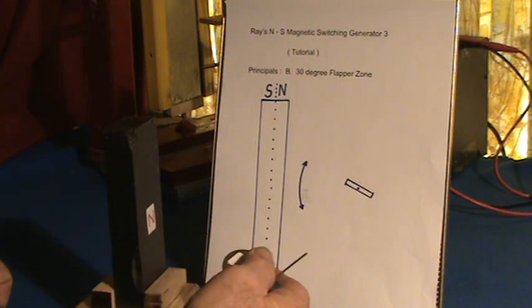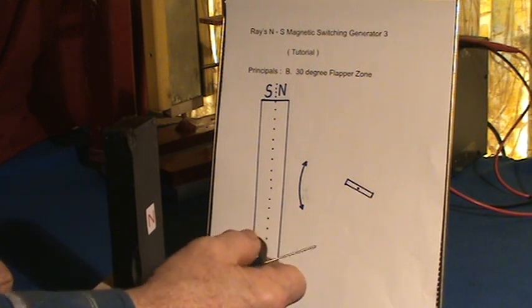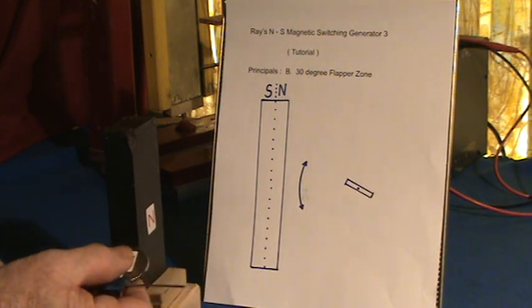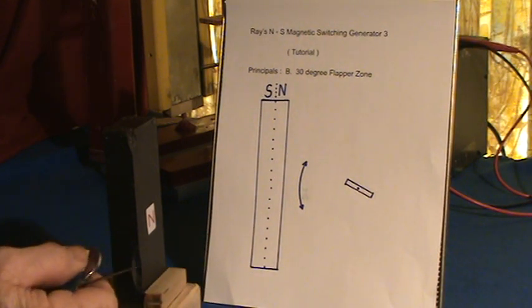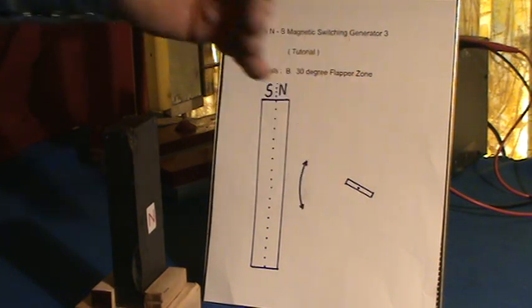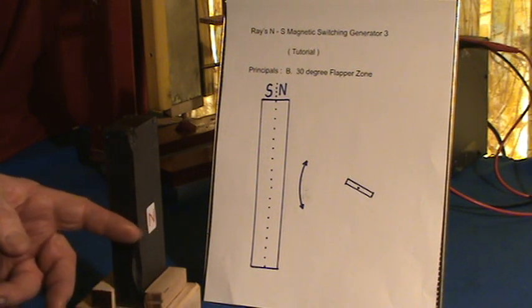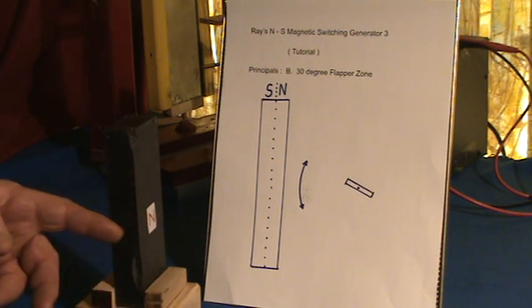But if you keep within the 30 degree firing range then it's easier to go through. So that's why I kept it within that 30 degrees for the flapper zone so we can go through this north-south barrier as easy as possible.